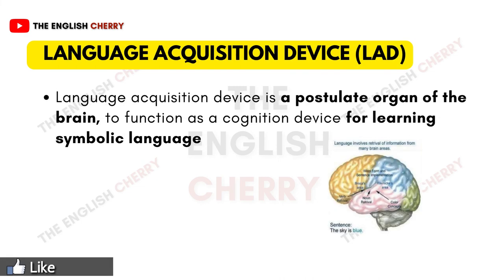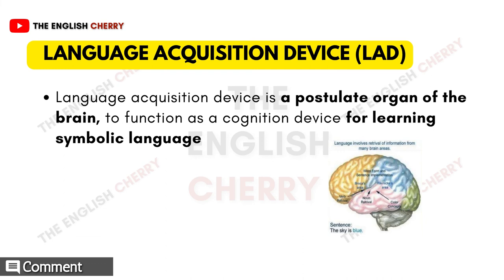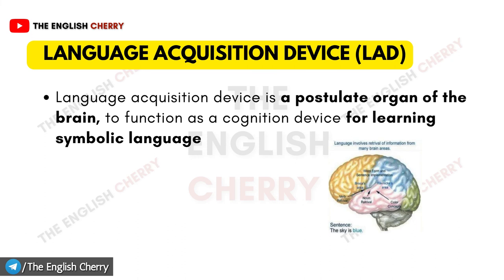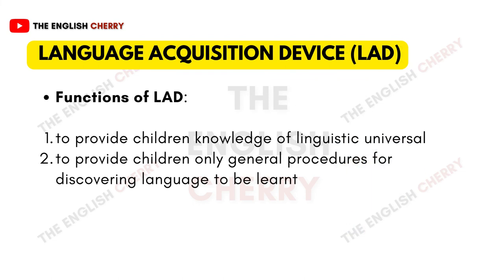Chomsky states that there are certain structures of the brain that control the way we relate to new things, events, or items of knowledge. He names this the Language Acquisition Device, or LAD — a postulated organ of the brain that is supposed to function as a cognition device for learning symbolic language. Children are born with a hardwired LAD in their brain whose only function is to process language, and it is separate from any other mental capacity. When LAD is utilized, it explains the remarkable speed with which children learn to speak and acquire grammar patterns. LAD has two distinct functions: providing children knowledge of linguistic universals such as word order or word classes, and providing children general procedures for discovering the language to be learned.